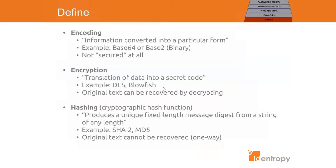Simply put, encoding is information converted into a particular form. At first glance encoded data looks different and looks like it's possibly secure, but it's actually the exact same information just shown in a different language or format. Think of this in the base numbering systems like base 10, base 64, or even base 2 binary, where the same information is written in each just in a different format. We'll get back to this in just a minute.